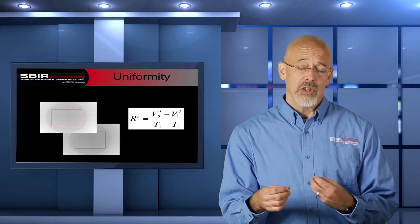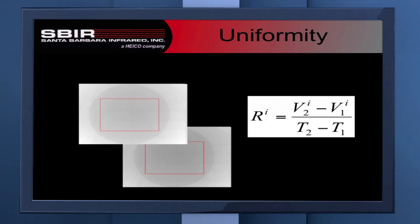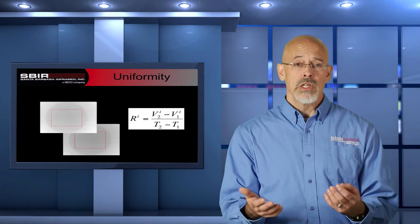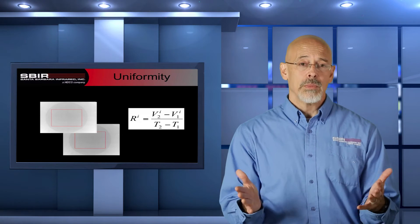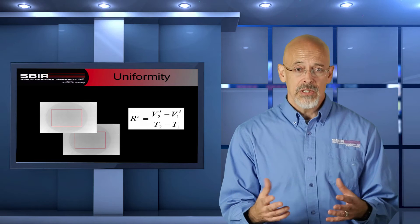The other type is where we're looking at the response of a pixel. We take every pixel, put it at two different temperatures, and measure the response. We compare them all, and ideally they're all the same, but typically they're not. So we're looking at that variation — that non-uniformity in responses — in the measurement.